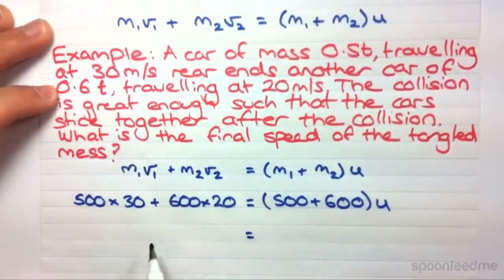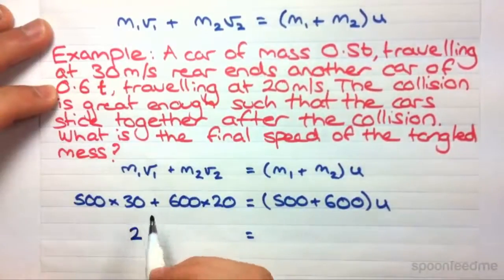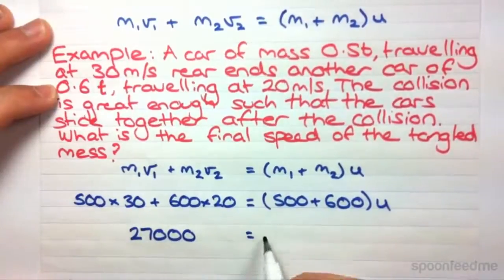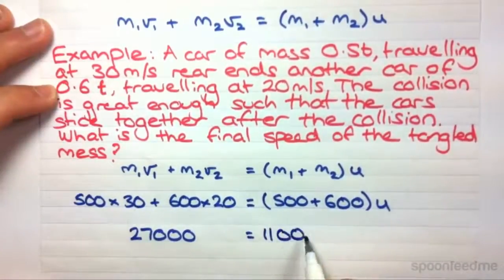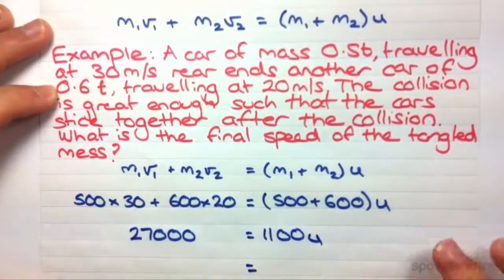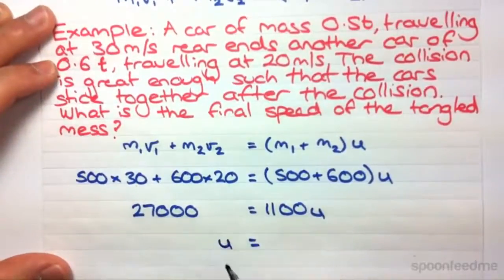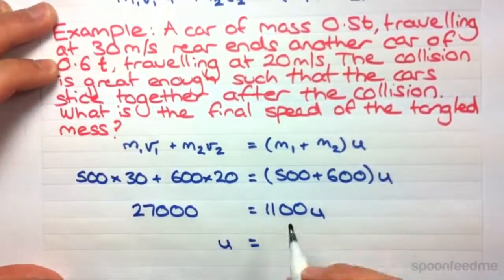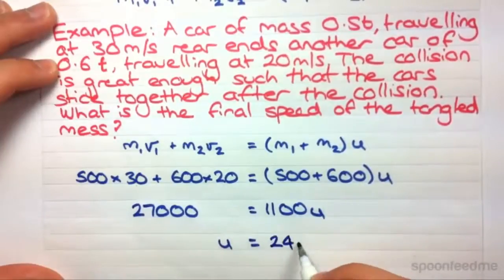So if we put that all in the calculator we end up with 27000 equals 1100U. Divide through by 1100 using a calculator and we find that the final velocity of the tangled mess is 24.5 meters per second.